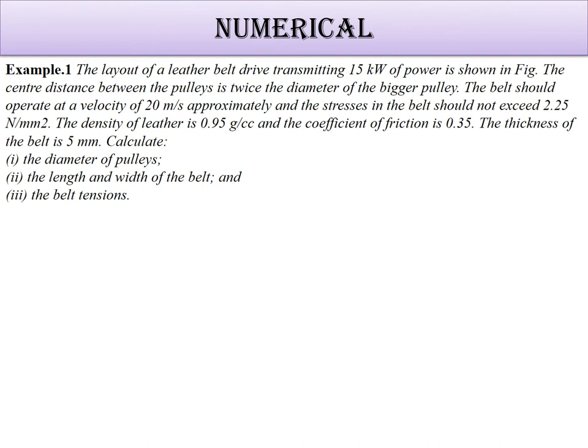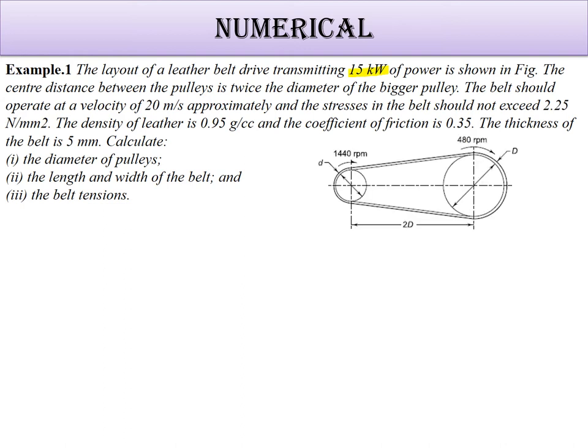The layout of a leather belt drive transmitting 15 kilowatt power is shown in the figure. The center distance is twice the diameter, which we need to find. The belt should operate at a velocity of 20 meters per second, and the stress should not exceed 2.25 Newton per mm square. The density of leather is 0.95 g per cc, coefficient of friction is 0.35, and the thickness is 5 mm.